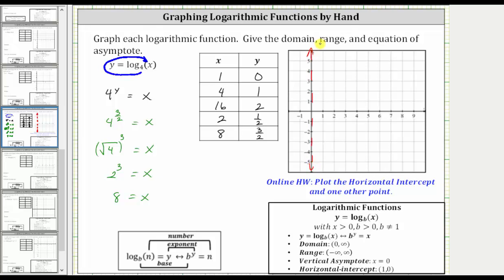And again, in the online homework, you select the log function graphing tool, click on the horizontal intercept, this point here, and then one other point, for example, four comma one. But let's go ahead and plot as many of these points as we can.